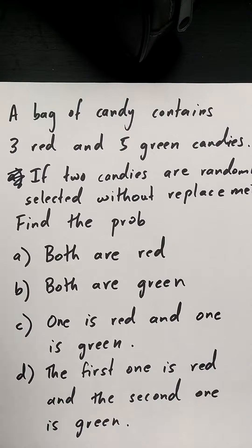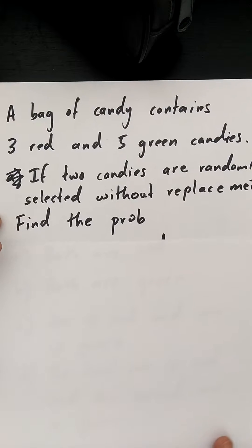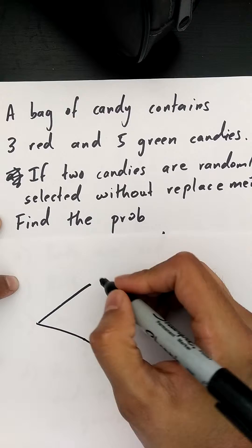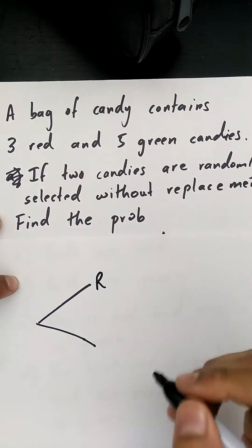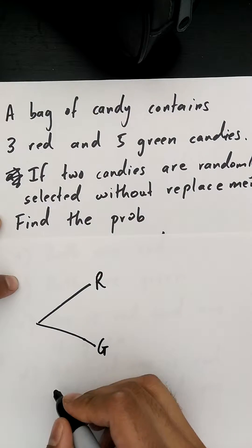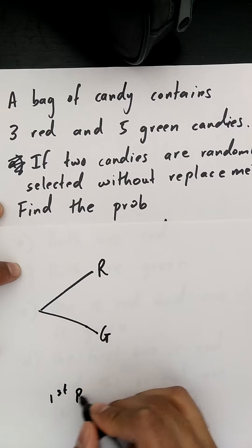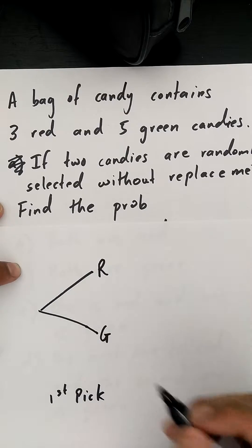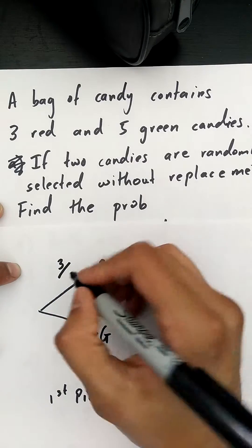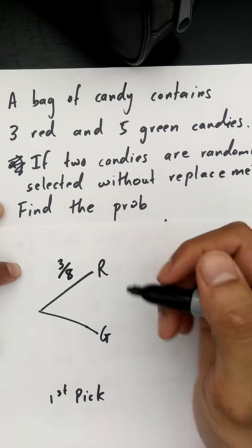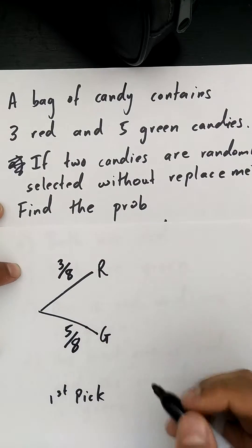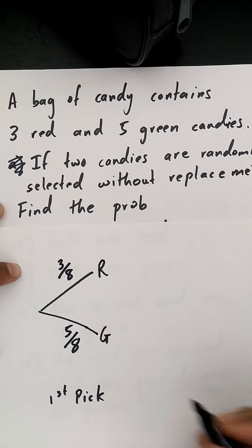To answer this question, I will draw a tree diagram. In my tree diagram I have two possibilities for the first pick: it's going to be a red candy or a green one. I have a total of three red candies out of eight in the bag, and five green candies out of eight in the bag.